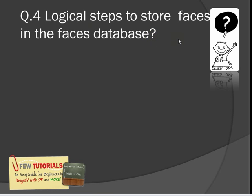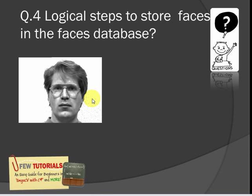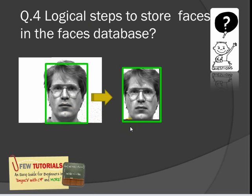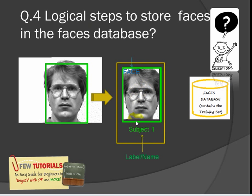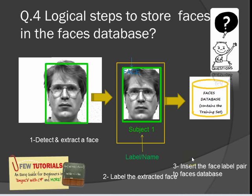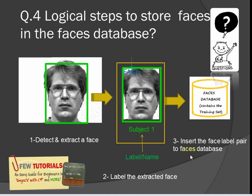Question four: logical steps to store faces in the faces database. They're pretty simple, at least in a matter of speaking. You take an image of a person, then you detect the face, then you extract the face, then you label your face. And this face-label pair is going to be sent to your faces database. To list it once again: detect and extract a face, label the extracted face, and send it into your faces database.